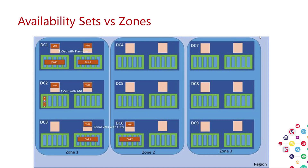Proximity placement groups are a performance feature, not an availability feature. If you put resources — storage and VMs — in a proximity placement group, it guarantees they'll all be within the same data center and generally network-close. This avoids the problem where a VM is in one city and storage in another city, causing latency and slower IO. The solution of proximity placement groups gives you the same data center and tight latency specs.